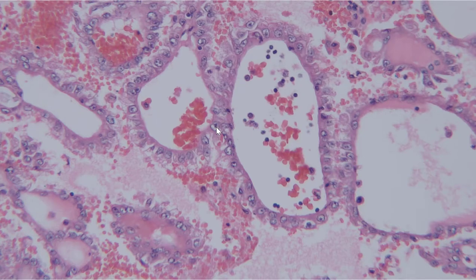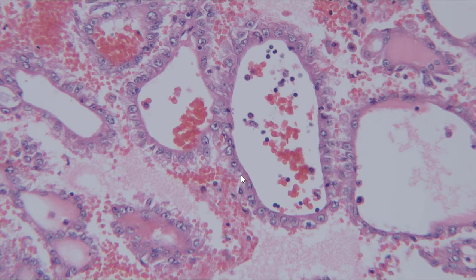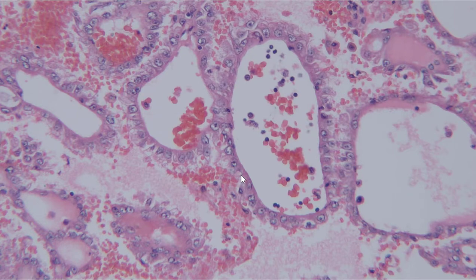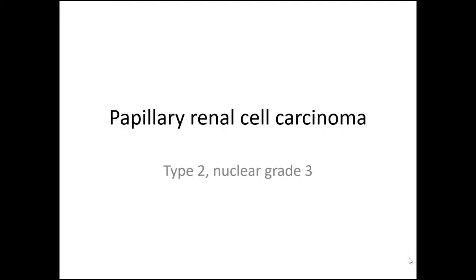Based on the combination of findings including papillary architecture, high nuclear grade, cytoplasmic eosinophilia, and positive expression of cytokeratin-7 and racemase, the differential diagnosis is pretty limited, and the best diagnosis in this case is papillary renal cell carcinoma type 2.